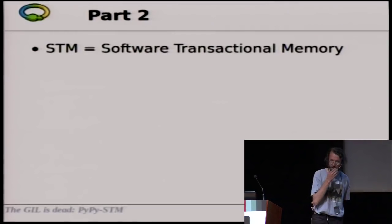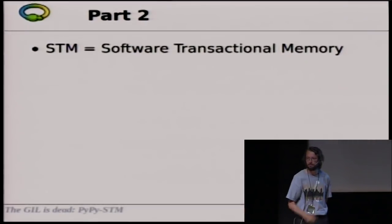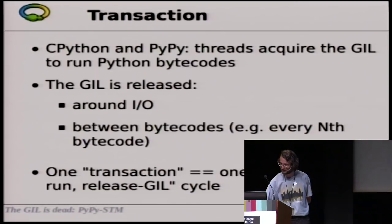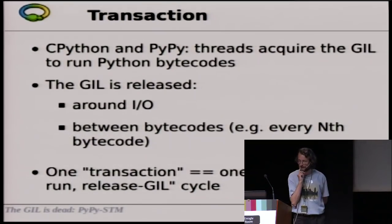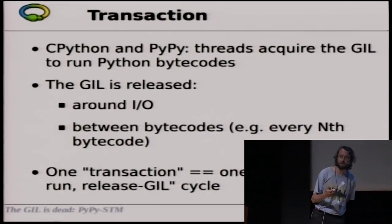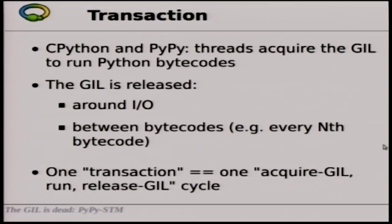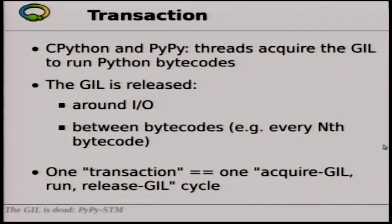I promised to explain what STM actually means: Software Transactional Memory. What is a transaction? Think about how the GIL works in CPython: the GIL is acquired, you run stuff, then you release the GIL — perhaps to do some input-output — then you re-acquire it. One transaction is the amount of time between acquiring the GIL and the next release of the GIL.